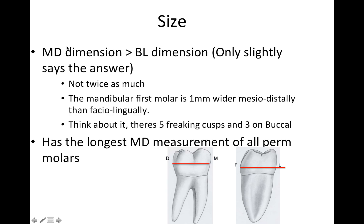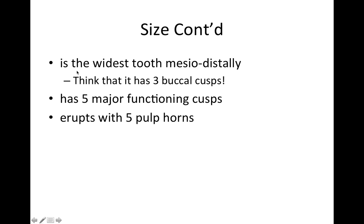Regarding size: the mesial-distal dimension is greater than the buccal-lingual dimension, but only slightly — by about one millimeter. The mandibular first molar is one millimeter wider mesial-distally than facial-lingually. With five cusps and three on the buccal, it has to be long in the mesial-distal direction. In fact, it has the longest mesial-distal measurement of all permanent molars and is the widest tooth mesial-distally, with five major functioning cusps and five pulp horns.